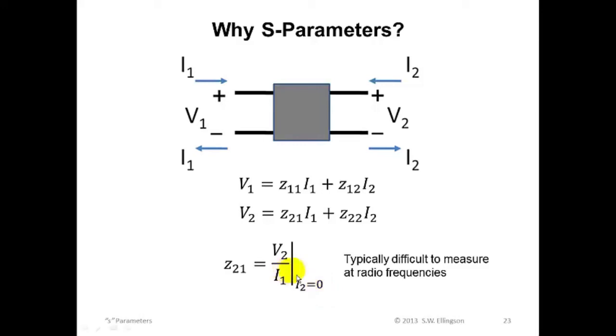The second problem is the fact that we've open circuited port 2. Many RF devices behave differently and sometimes very badly when they're open circuited. In particular, the behavior of active devices, such as transistors, may be quite different when open circuited.